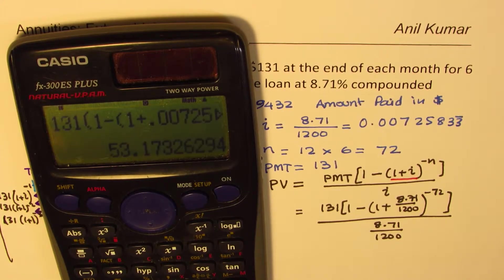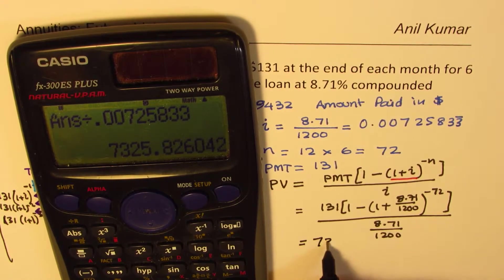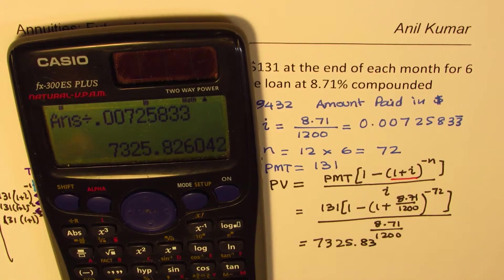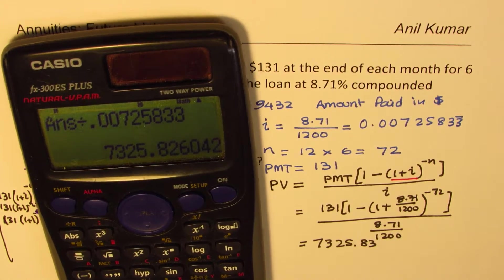And now we'll divide by, or we'll just say equal to, and then we are going to divide by 0.00725833, the rate of interest, correct? And write down our value. So the present value comes out to be 7325.8, rounded to two decimal places, 83. So that is the value which we get as the present value.